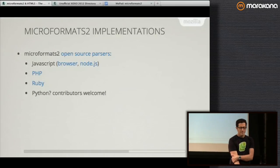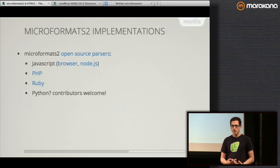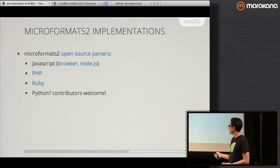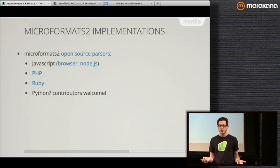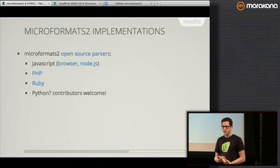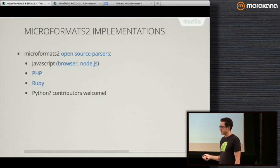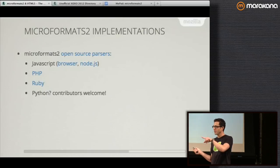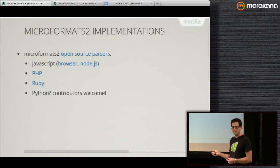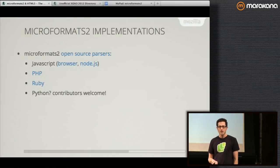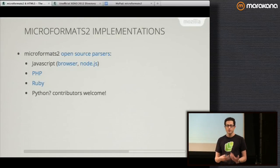Because microformats 2 has a defined parsing model and is generic, we already have numerous parsers actively used on websites. The most commonly used is the PHP one — a lot of websites' back ends are built in PHP. There's also JavaScript parsers for browser extensions and a Node.js microformats 2 parser. And there's a Ruby microformats parser as well. We're hoping to see a Python one. The PHP parser is the most complete, has the biggest test suite, and is really well done — a good starting point for porting to other languages.